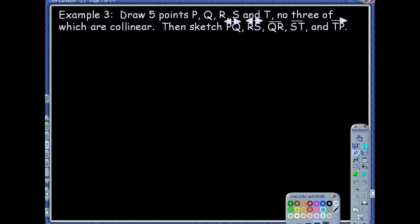All right, for this next one, we're going to be drawing five points, P, Q, R, S, and T, no three of which are collinear. Ooh, so no points here that are going to, no three points that are going to be collinear. So two points can be on the same line. They have to be. Yeah, but then if you throw in that third point, it can't be on that line.